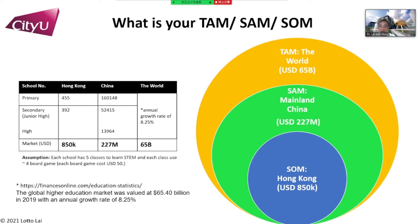However, in Hong Kong it is much smaller — there are 455 primary schools and 392 secondary schools, giving a figure of about 815,000. This is our calculated TAM, SAM, and SOM.